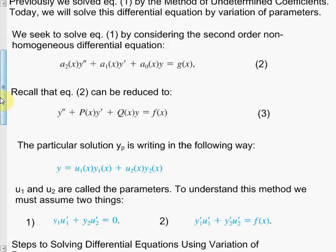We let n equal to two and seek to solve the second-order non-homogeneous differential equation. We can rewrite it by dividing everything by a₂, so p(x) is a₁ divided by a₂, q(x) is a₀ divided by a₂, and f(x) becomes g(x) divided by a₂. Don't want to forget that.